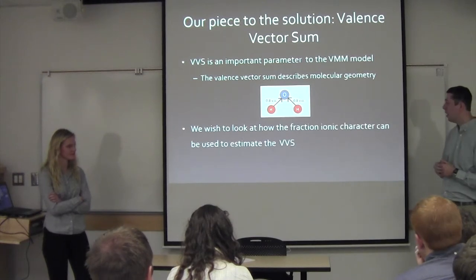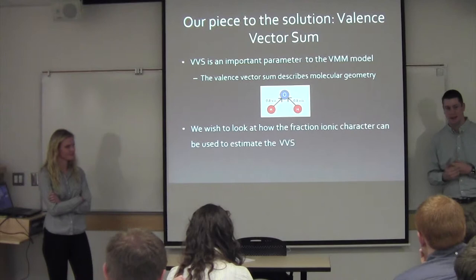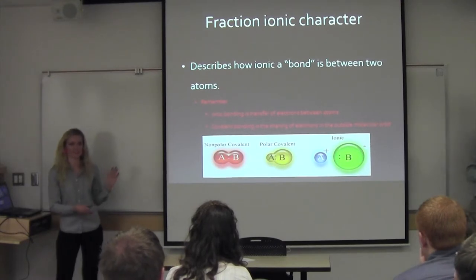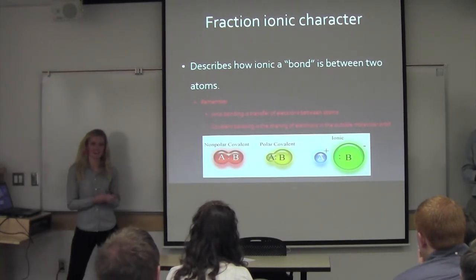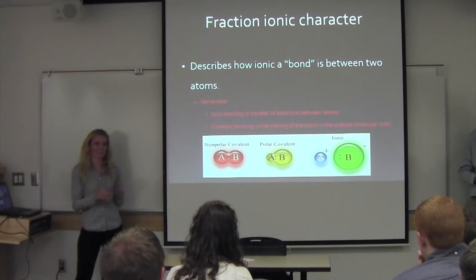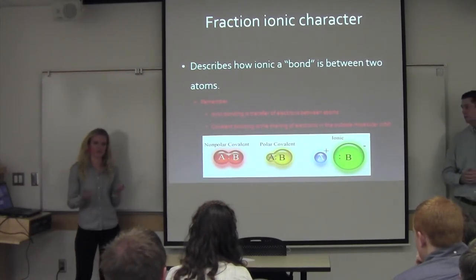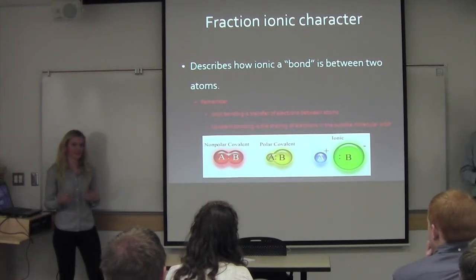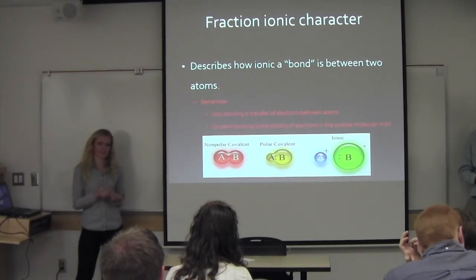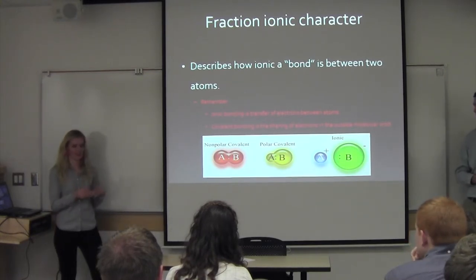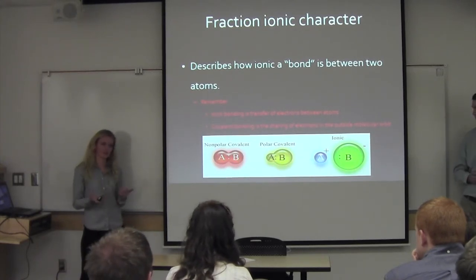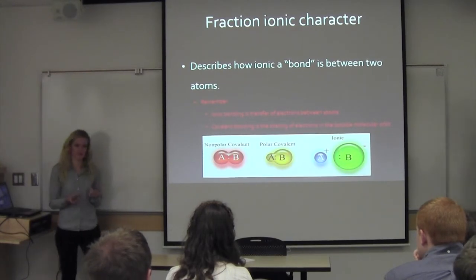We're going to plot the valence vector sum against the fraction ionic character. We need to understand both. In mineralogy, you might remember this term: it describes how ionic a bond is between two atoms. An ionic bond is the transfer of an electron between two atoms with very different electronegativities, while a covalent bond is the sharing of an electron in the outer orbital between two atoms with similar electronegativities.